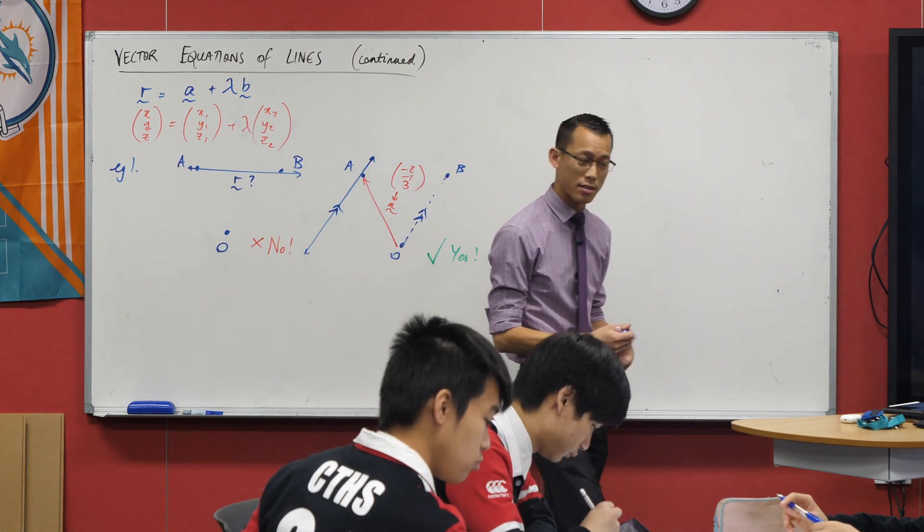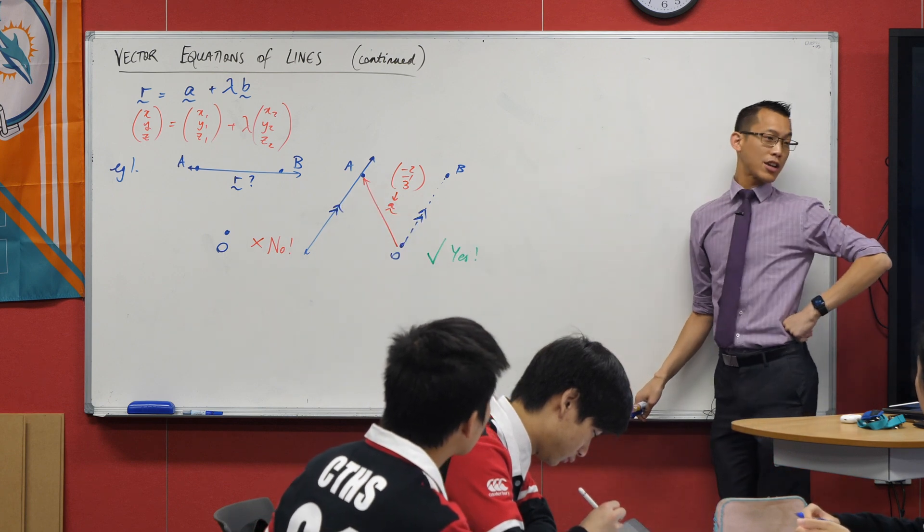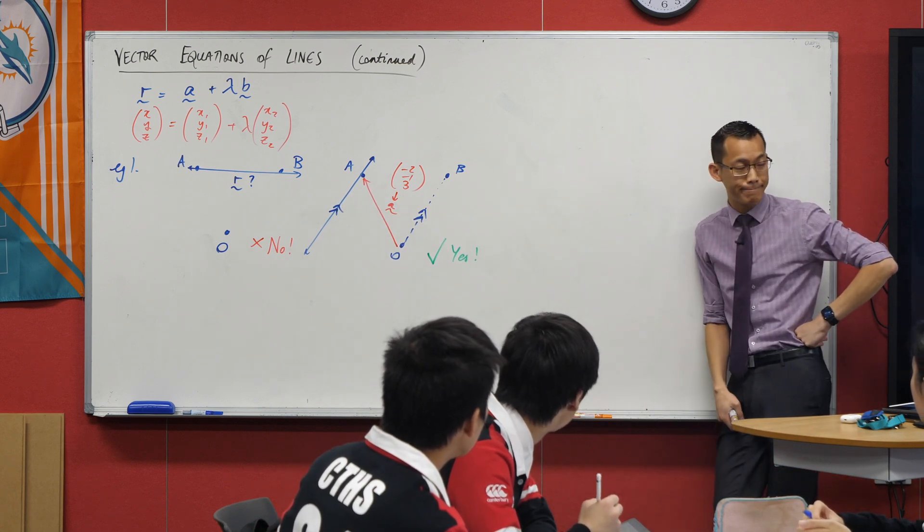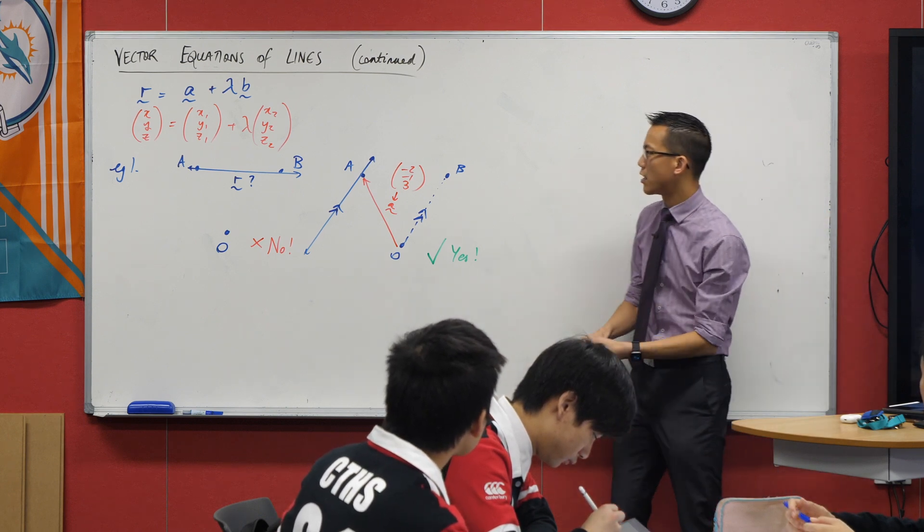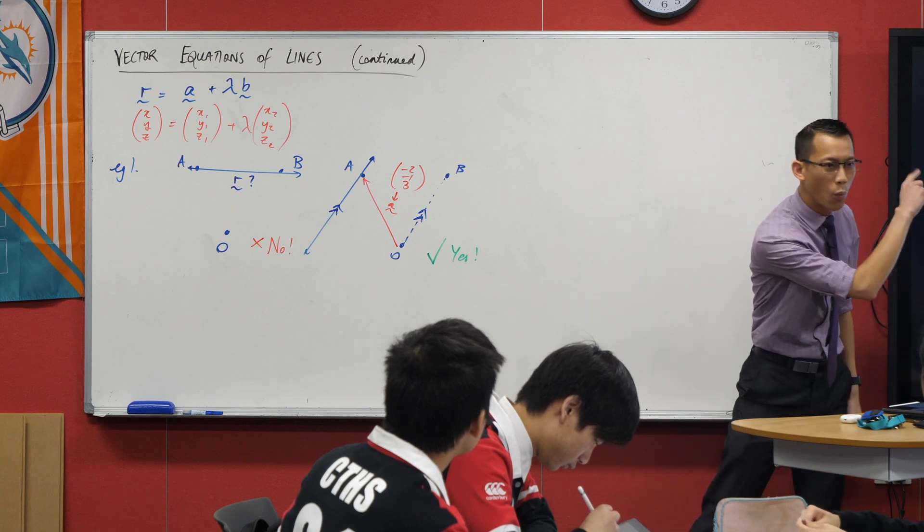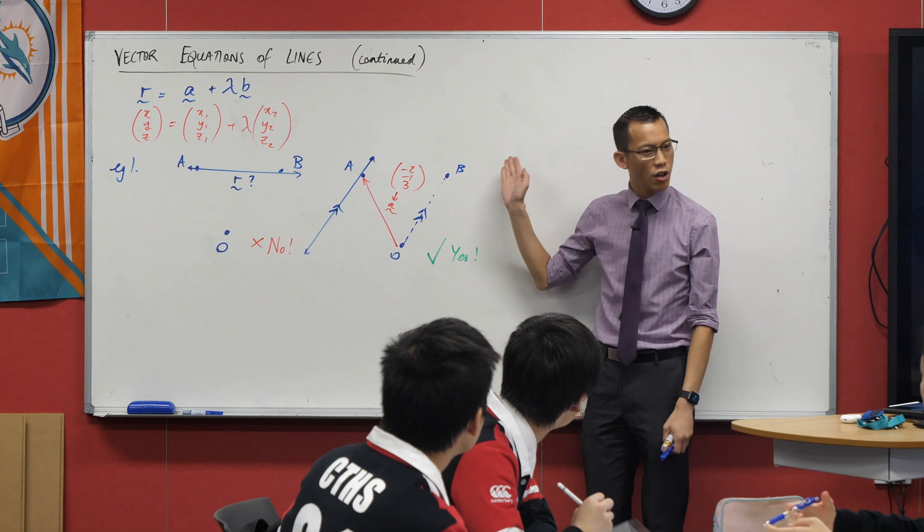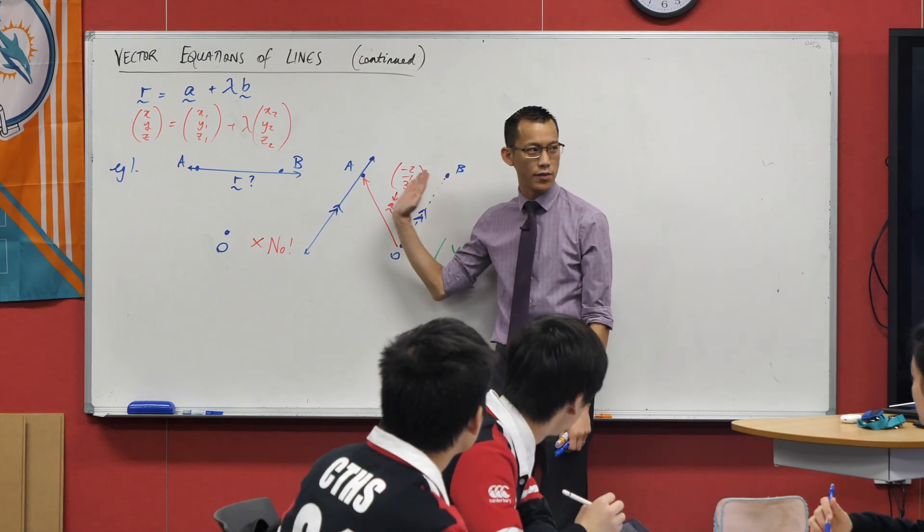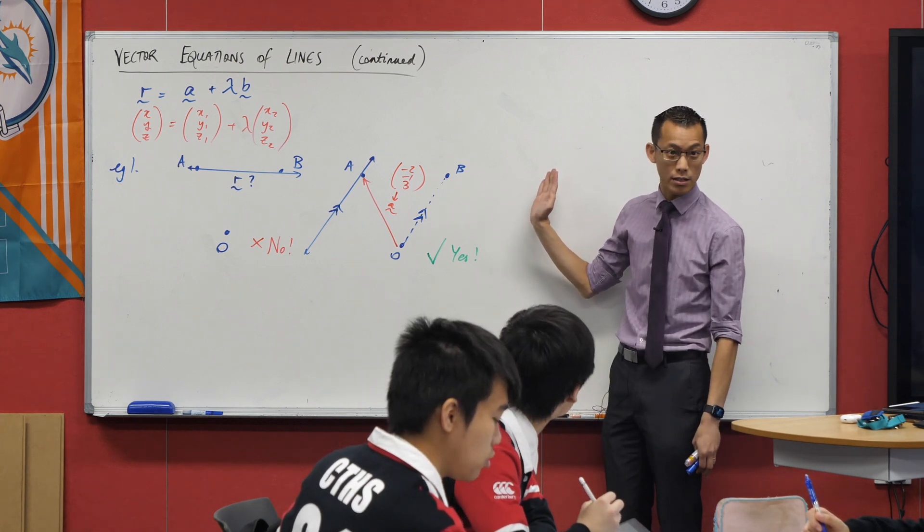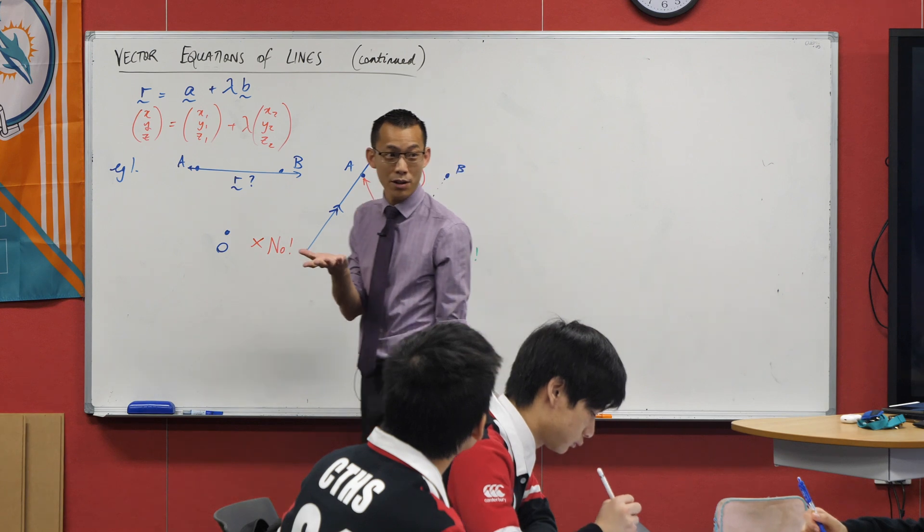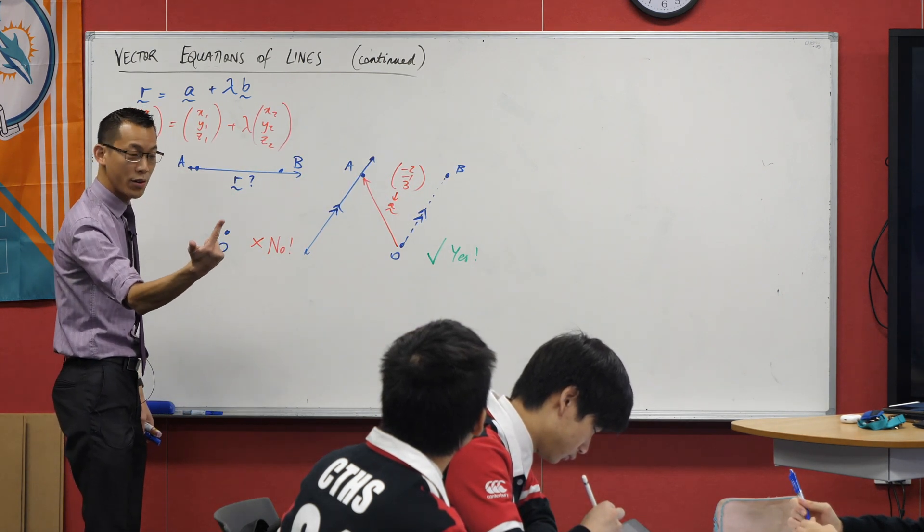Get onto the line, capital A is on there, so the particular vector in this case will be negative two, negative one, and three. There's my position vector. Now I need a direction vector. What did you tell me about parallel lines? What can you say about the direction vectors of parallel lines? They can either be just flat equal to each other or, for example, it's 1, 0, 1.